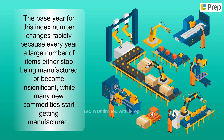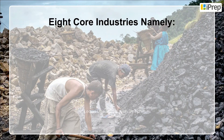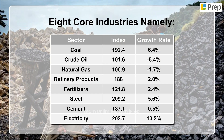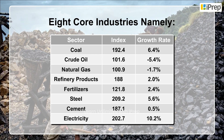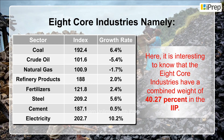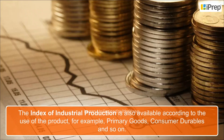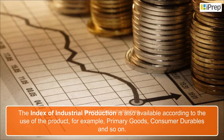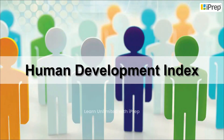Many new commodities also start getting manufactured each year. The core industries — namely coal, crude oil, natural gas, refinery products, fertilizers, steel, cement, and electricity — are the main branches of the IIP. These eight core industries have a combined weight of 40.27 percent in the IIP. The Index of Industrial Production is also available according to the use of the product, for example, primary goods, consumer durables, and so on.